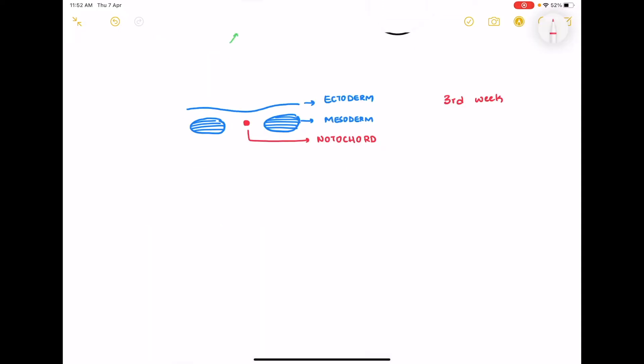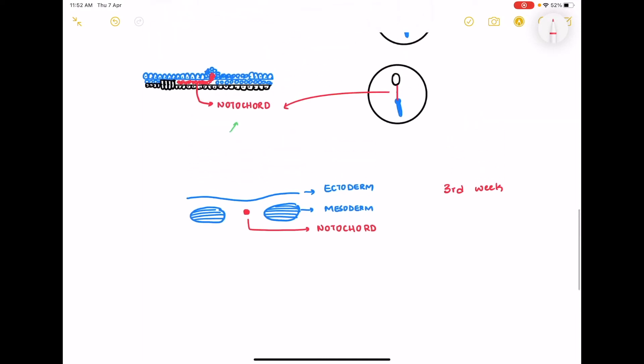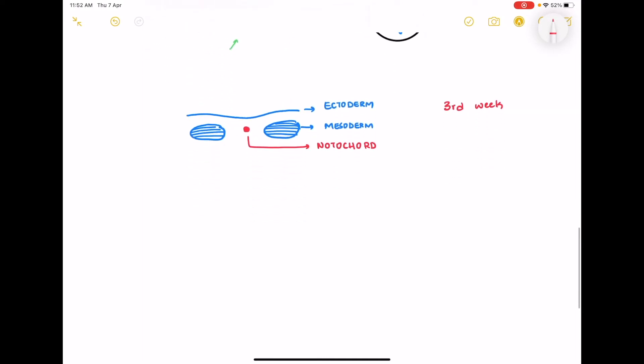Now let us look at the formation of the neural tube. The neural tube that develops is going to develop into the central nervous system, that is your brain and the spinal cord. So from here on we're going to look at a cross-section perpendicular to the cross-section seen previously. Okay so here we have the ectoderm, the mesoderm and the notochord. Here will be your endoderm.